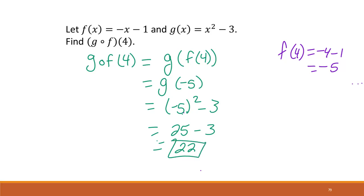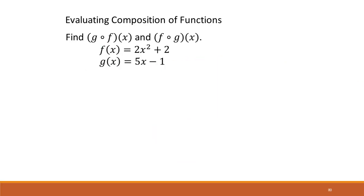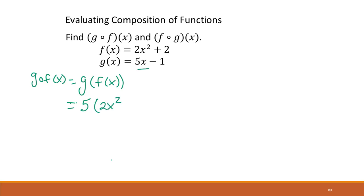Now we want both g(f(x)) and f(g(x)) symbolically. For g(f(x)), we substitute f(x) = 2x² + 2 into g everywhere there's an x. With g(x) = 5x − 1, that gives 5(2x² + 2) − 1. Distributing: 10x² + 10 − 1 = 10x² + 9.